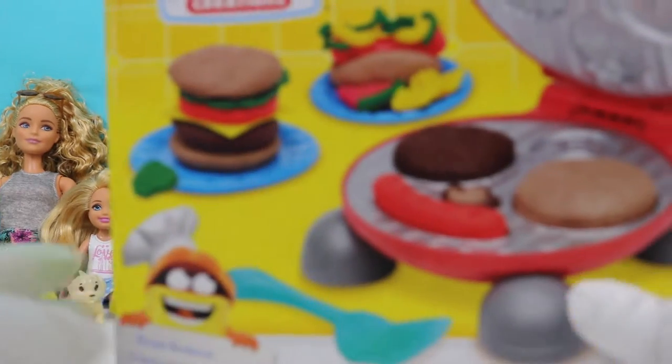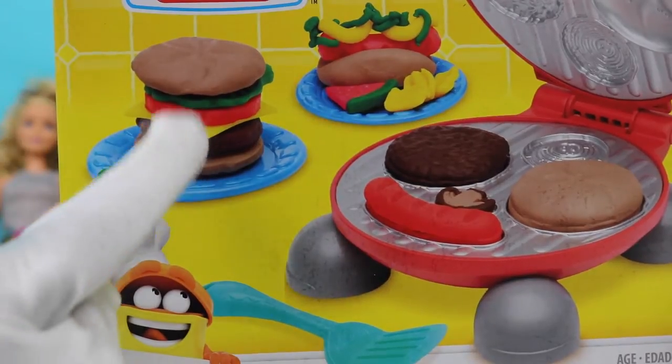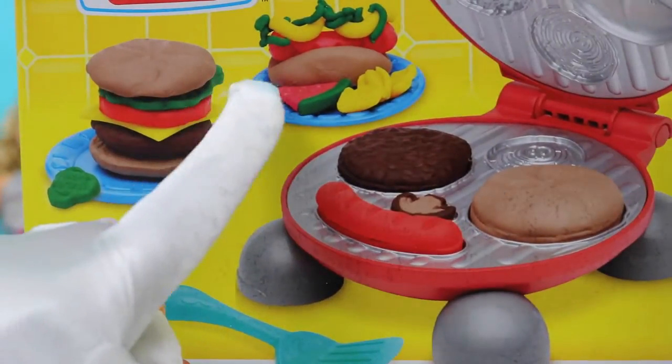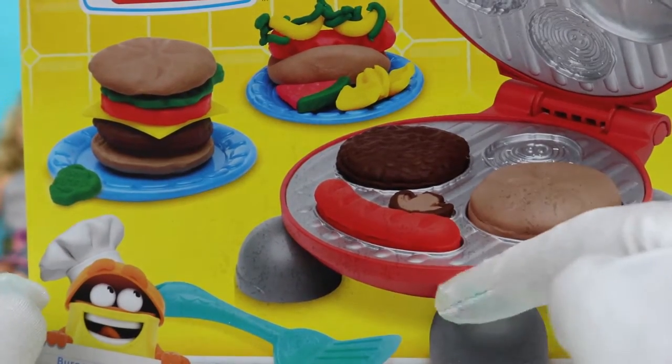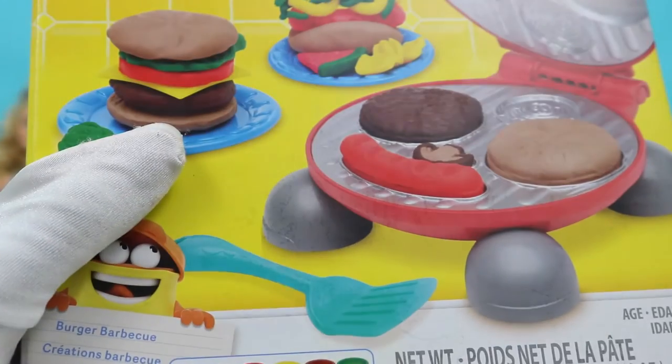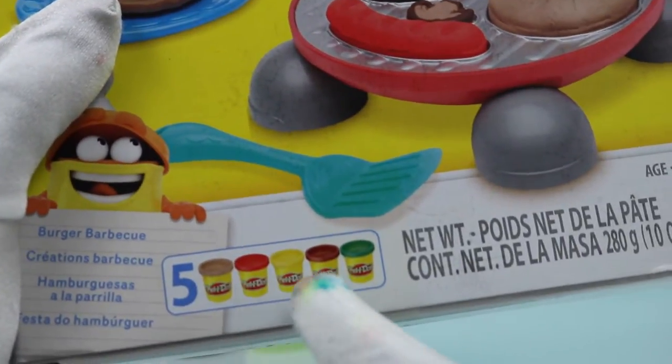And we'll show you everything that's in here. We have, you can make a burger, hot dog, watermelon, and it comes with a grill with all the different molds and a spatula. And it comes with five Play-Doh pieces. A brown, red, yellow, a darker brown, and then a green.